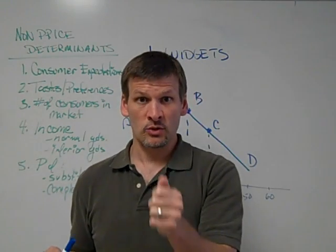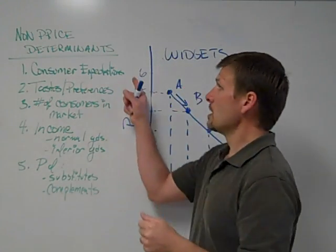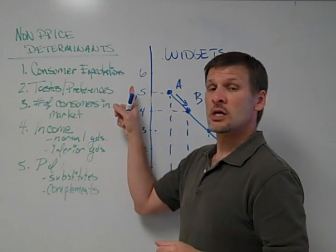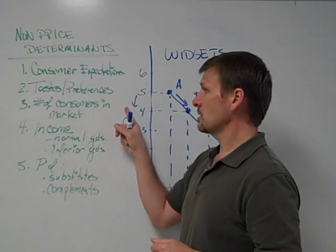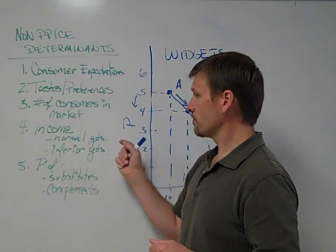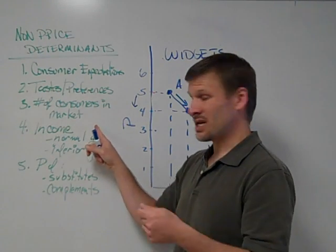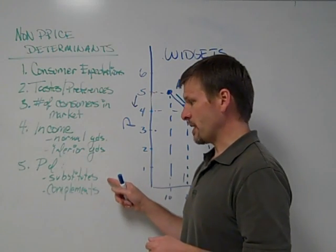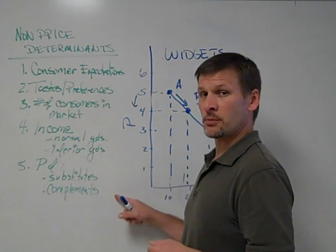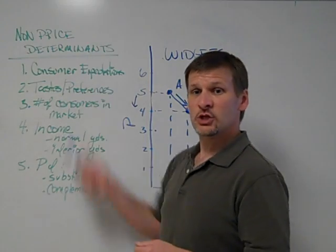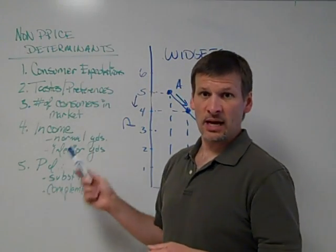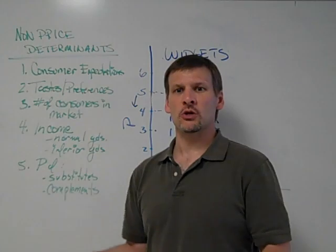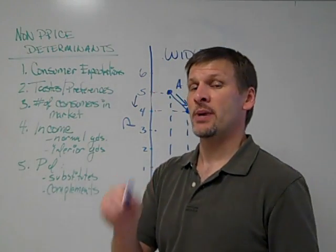There are six of those types of events: consumer expectations, consumer tastes and preferences, number of consumers in the market, changes in consumers' income, and changes in price with respect to substitute goods and complementary goods. Any time we have any change in one of these types of variables or things that we call non-price determinants, we will have a change in demand.